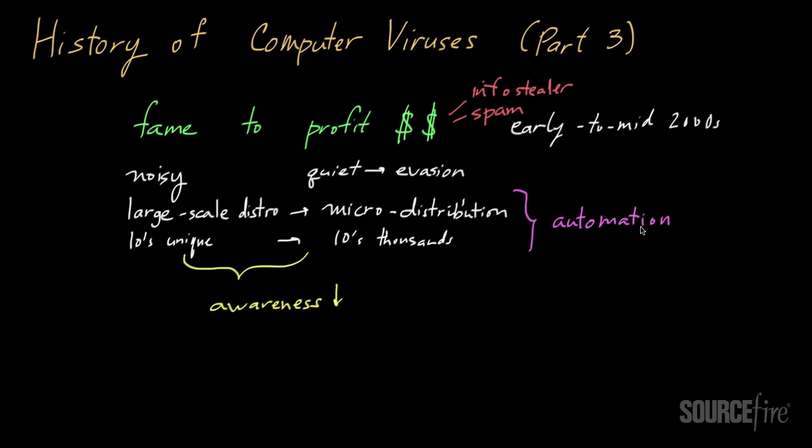One thing that's made matters a lot worse has been the development of an underground economy. The underground economy is basically a place where cyber criminals can buy, sell, trade, or exchange attack tools. They can exchange information.